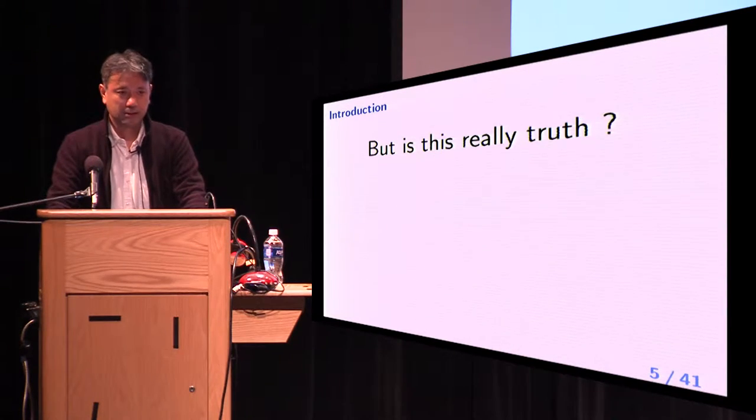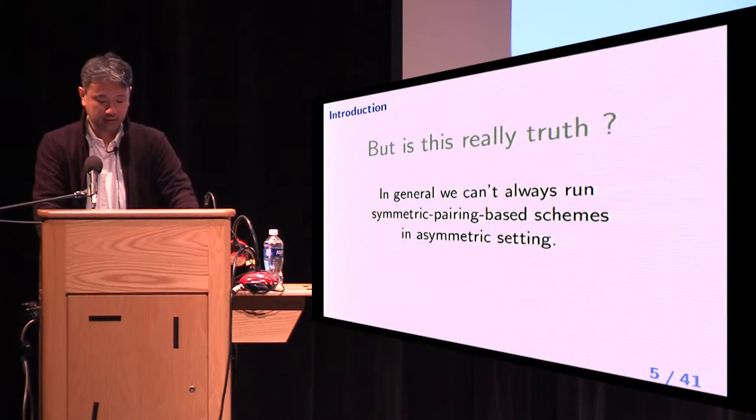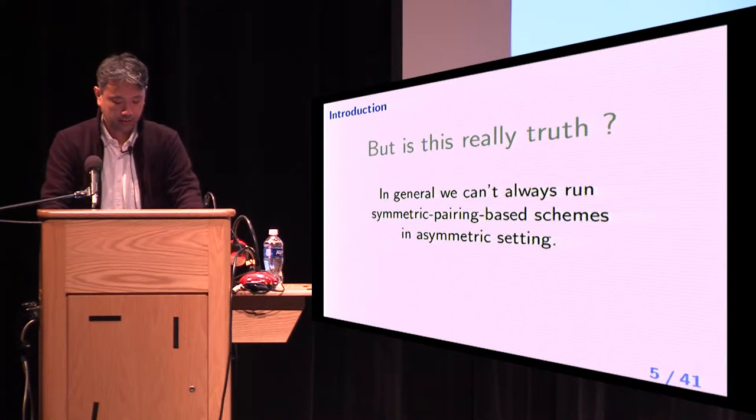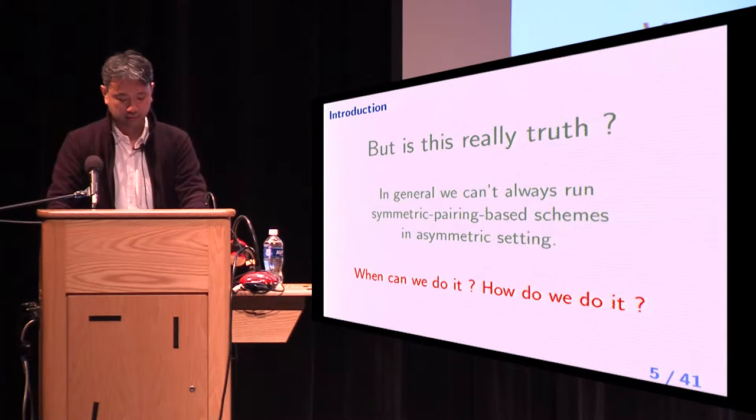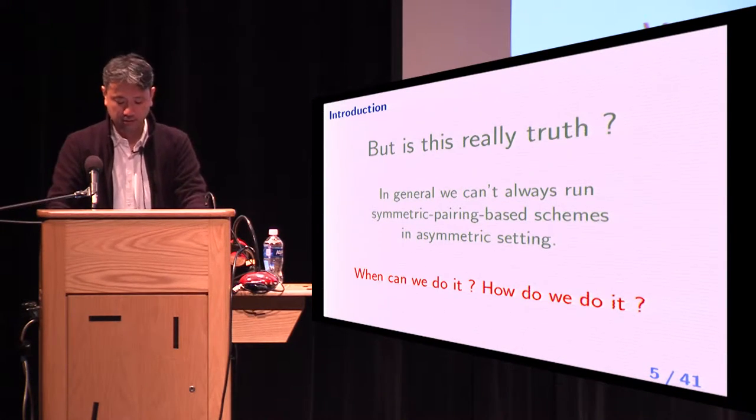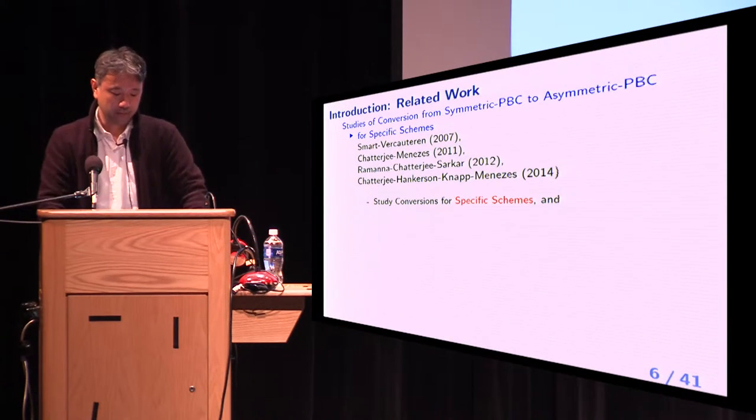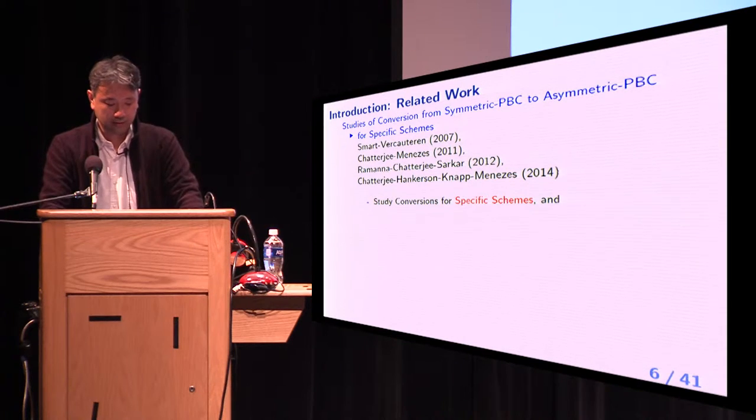But is this real truth? It is known that, in general, we can't always run symmetric pairing-based schemes in asymmetric setting. Here we have a question. When can we do it? How do we do it? In the literature, many papers answer this question.